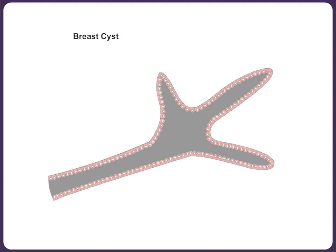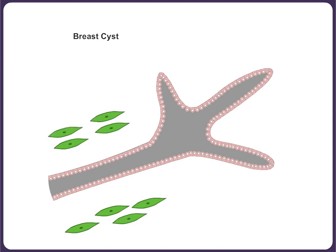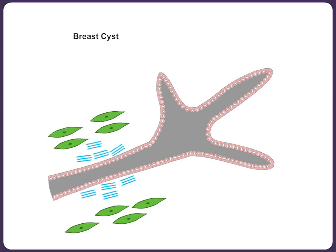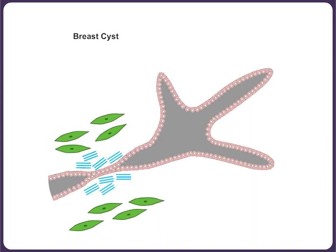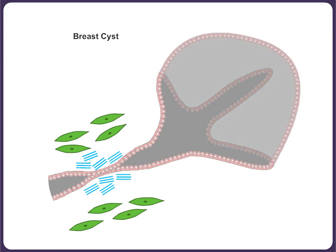In the perimenopausal period, involuntary changes with overgrowth of the fibroconnective tissue around the ducts leads to ductal blockade. Dilatation and unfolding of the lobules along with pent-up secretion result in cyst formation. Initially, microscopic cysts are formed. Many such microscopic cysts may join together to form a macrocyst.